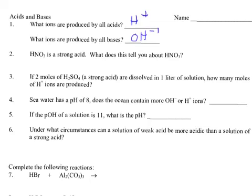Alright, number three. I have two moles of H2SO4, a strong acid, which means it's going to completely separate. It's dissolved in one liter solution. How many moles of hydrogen ions are produced?